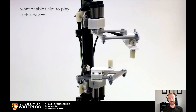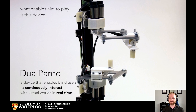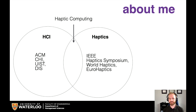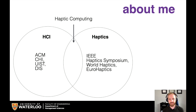This device is called Dual Panto. It's a haptic device, and that is my research area — haptic technology. I work at the intersection of human-computer interaction and haptics, haptics being technology that engages the sense of touch, and I call my research agenda haptic computing. But that's enough about me. Let's keep moving on about HCI.